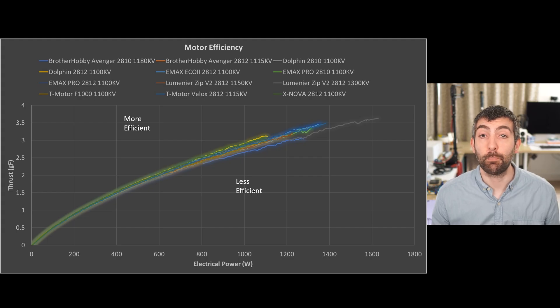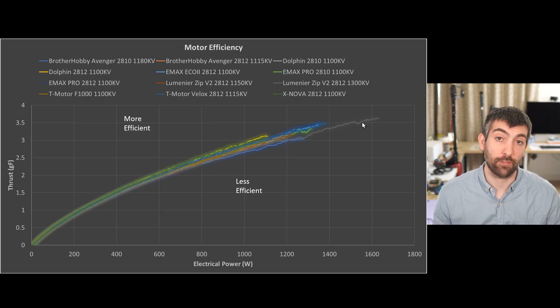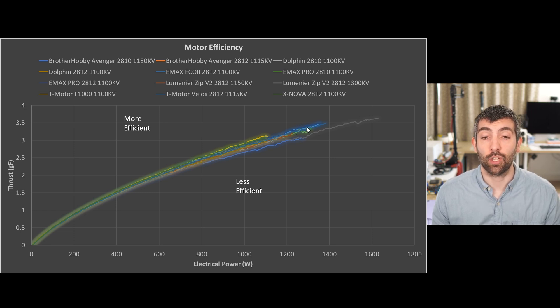Now let's take a look at motor efficiency measured during that prop ramp. Here we're looking at electrical power versus thrust. Motors that can produce more thrust with less power are more efficient, and motors that produce less thrust with more power are less efficient. We can see that the Lumineer Zip V2 1300 kV, that kV again just a little bit too high for the prop it's trying to spin, that hurts its efficiency. Although it draws a lot of power and produces a lot of thrust, it's not tremendously efficient. If we look at the Emax Eco 2 and Emax Pro series, the 2812s are doing really well in terms of their efficiency, and we're also seeing great efficiency from the Dolphin 2812 and the Xnova 2812 as well, although they're not producing as much maximum thrust as the motors from Emax, so that's something to bear in mind.